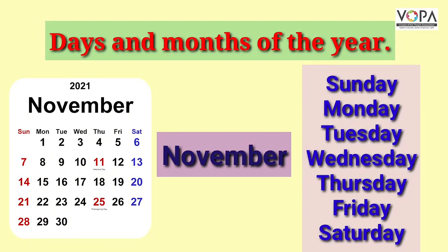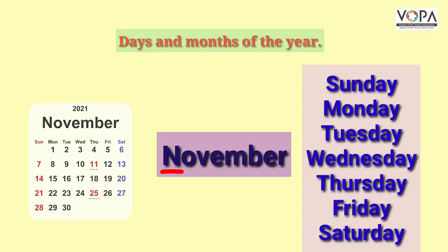Days and months of the year — yaan till pahile aksar capital letters lihaave. Ya thikani, November yaa mahi naatit yaan hai aksar capital lihaave. And Sunday, Monday, Tuesday, Wednesday, Thursday, Friday, Saturday — yaa prathik days maadil pahile aksar he capital letters lihaave.